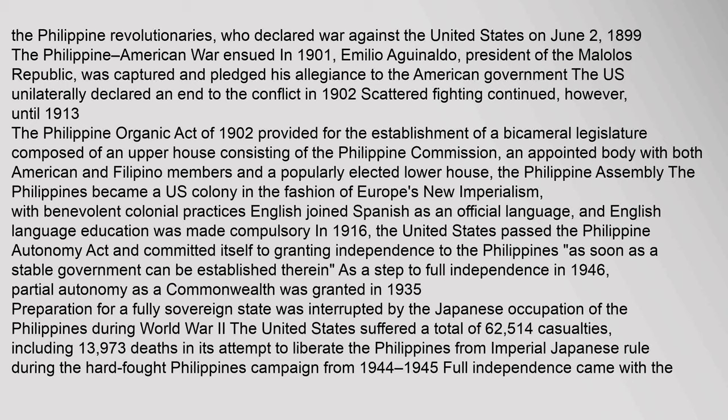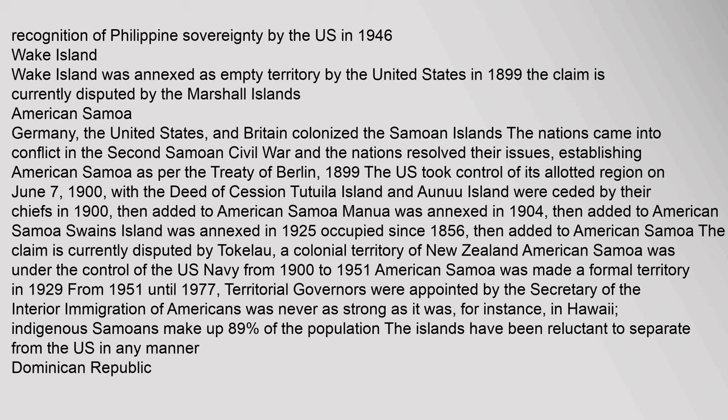As a step to full independence, partial autonomy as a Commonwealth was granted in 1935. Preparation for full sovereignty was interrupted by the Japanese occupation during World War II. The United States suffered a total of 62,514 casualties, including 13,973 deaths, in its attempt to liberate the Philippines during the hard-fought Philippines campaign of 1944–1945. Full independence came with the recognition of Philippine sovereignty by the U.S. in 1946.